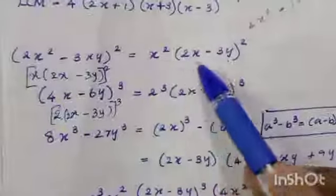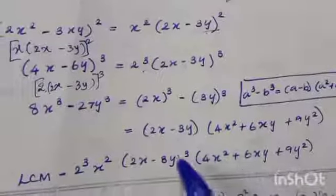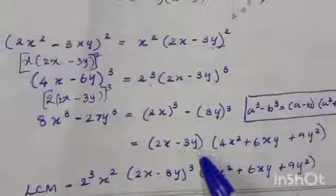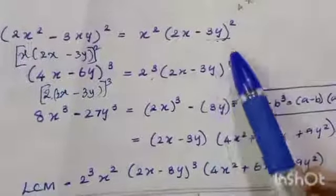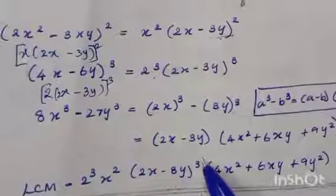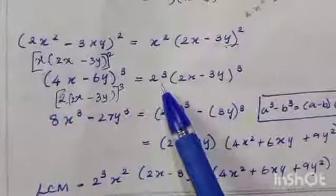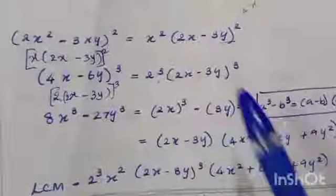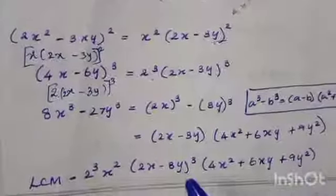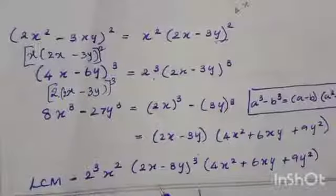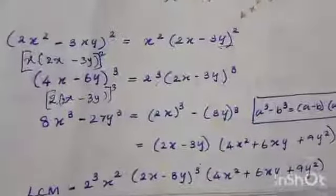Now find the LCM of all three factored expressions. The common factor (2x-3y) appears in all three; the highest power is (2x-3y)³. The independent factors are 2³, x², and (4x²+6xy+9y²). Therefore, LCM = 8x²(2x-3y)³(4x²+6xy+9y²).